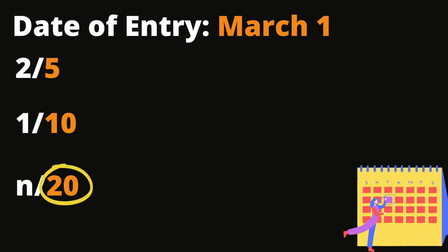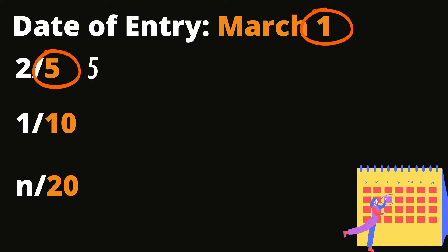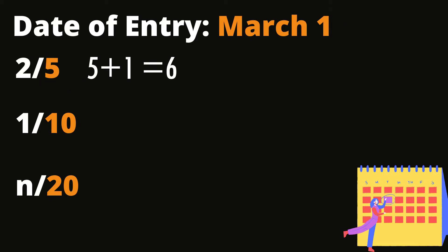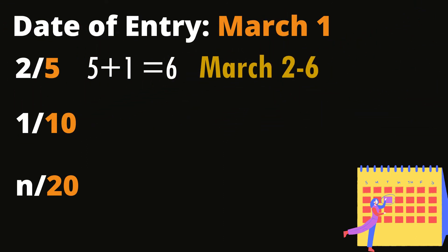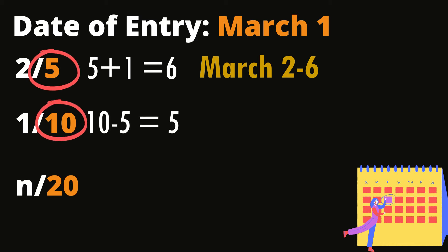For the first credit term, basically all we do is add the denominator with our date of entry. So 5 plus 1 equals 6, therefore the first discount period is from March 2 to March 6. For the second credit term, that would be 10 minus 5 equals 5 — another 5 days is extended.